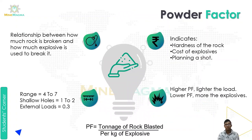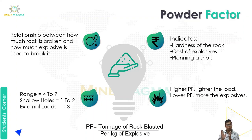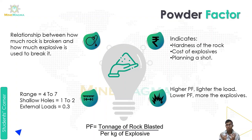Next is powder factor. Powder factor is the relationship between how much rock is broken and how much explosive is used to break it. Think of the amount of explosive used for the amount of rock breakage — the relationship between these two is called powder factor. The range of powder factor is from 4 to 7 for general blasting, 1 to 2 for shallow holes, and around 0.3 for some conditions.